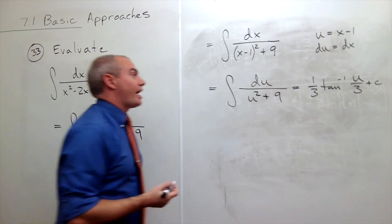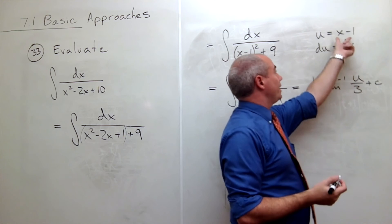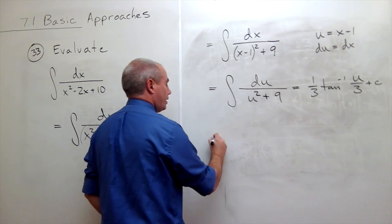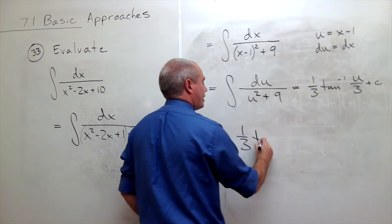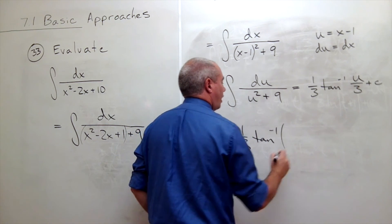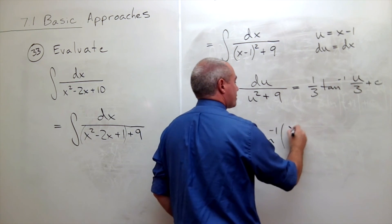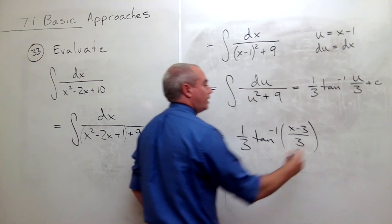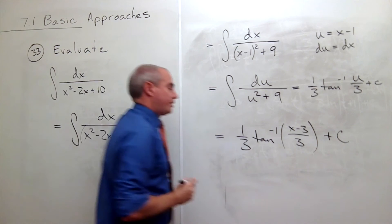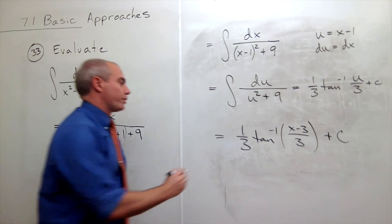Now I just have to plug u back in. u is x minus 1, so I can write that the answer here is 1 third tan inverse of x minus 1 divided by 3 plus a constant. And we're done.